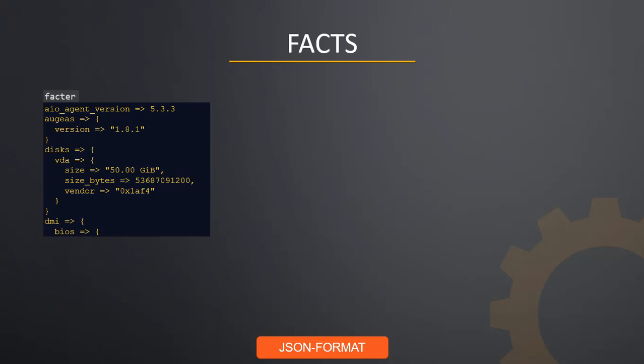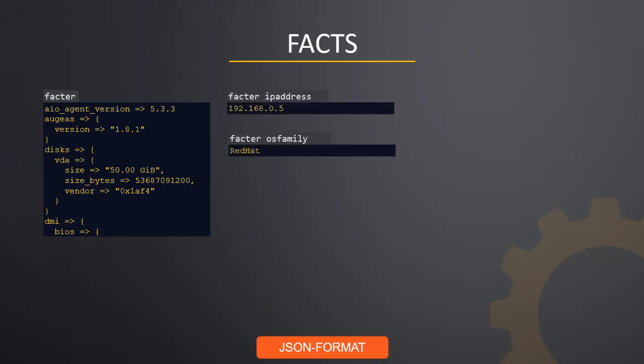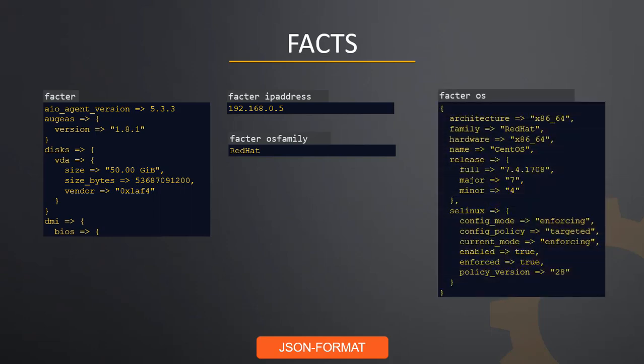Puppet uses a utility called Facter to provide this detail. The returned output of Facter is in key-value pairs, also called Facts. All facts available in Facter can be used with any classes and gives us the ability to customize our node configuration. You can list specific facts by adding the names of the fact you wish to know, and even get information on a particular parameter using dot notation.